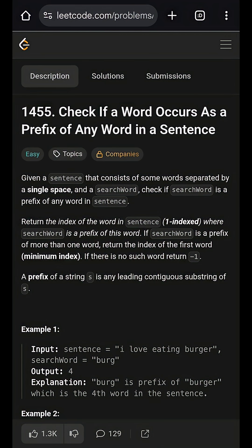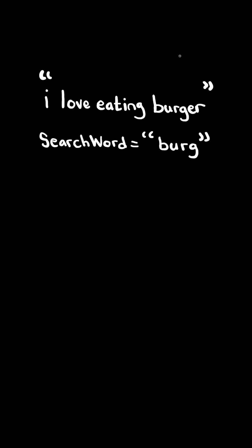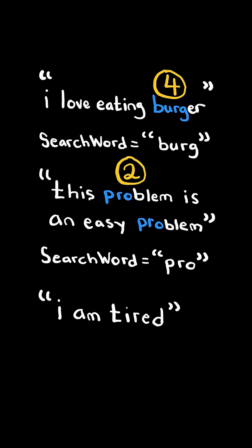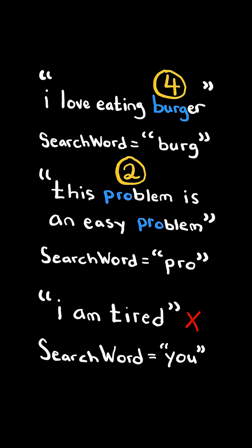Check if a word occurs as a prefix of any word in a sentence. Given a sentence and a search word, if the search word appears in a prefix of a word in the sentence, return the one-based index of where the word exists in the sentence. In this case, it's the fourth word. If it exists multiple times as a prefix, we return the index of the first occurrence. If it does not exist as a prefix in the sentence, we return negative one.